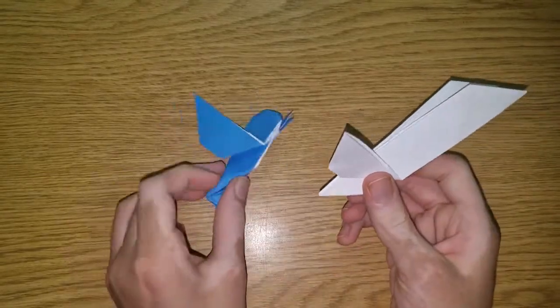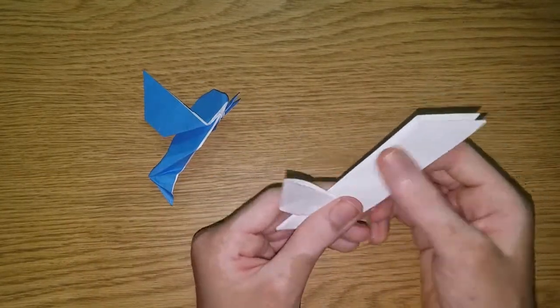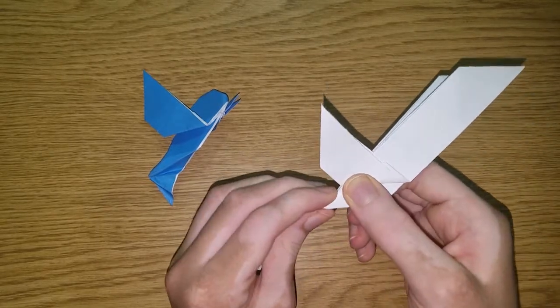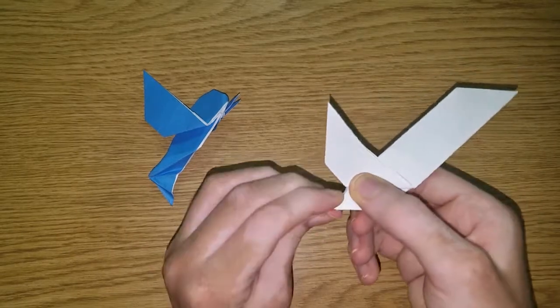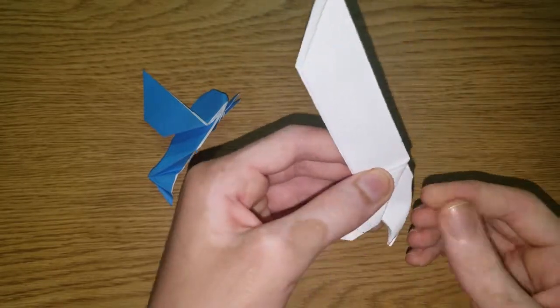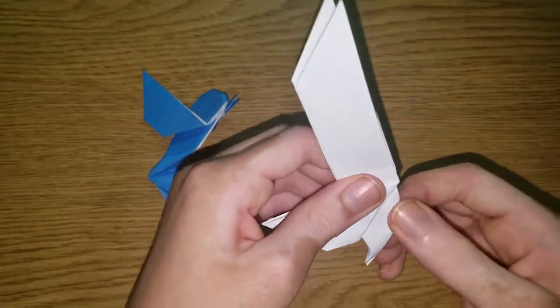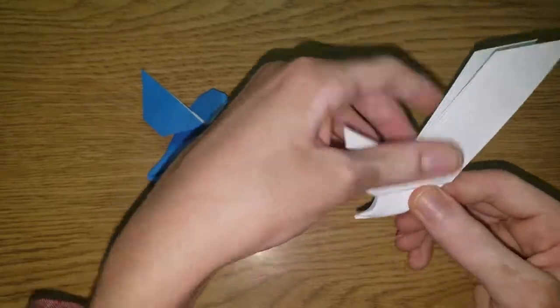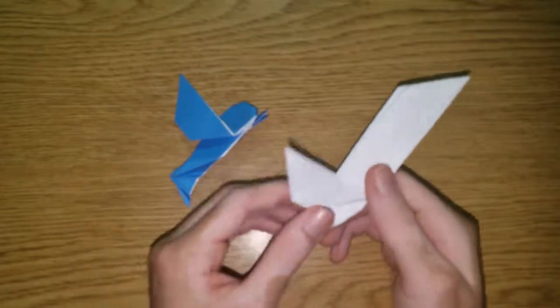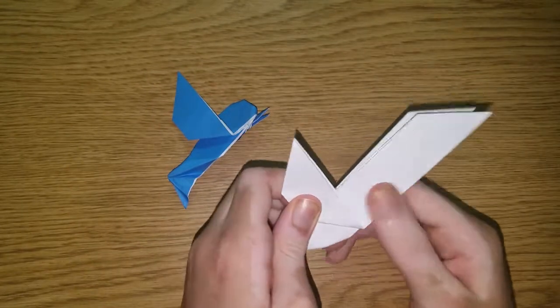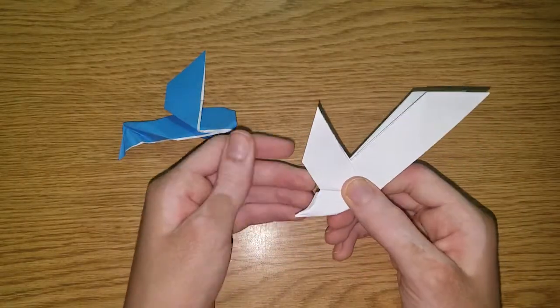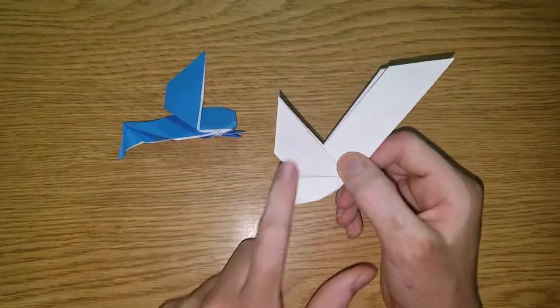And then we have this part. So that is the head and the tail. We can make a little curved crease right there, just to make it look a little more round. And that looks pretty good. And you can adjust this wing if you need to.